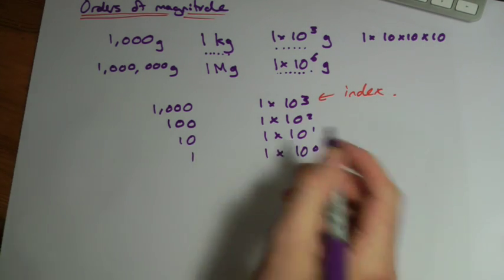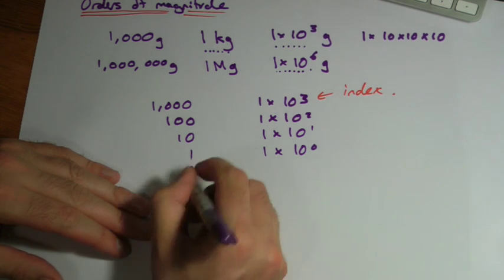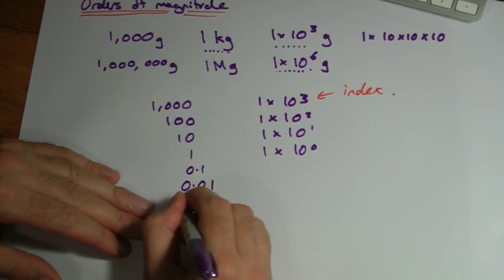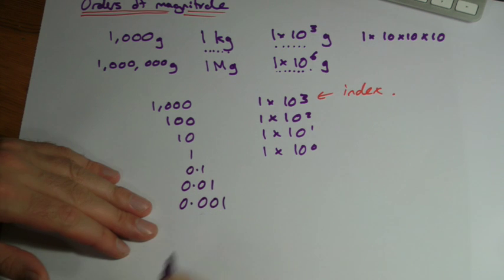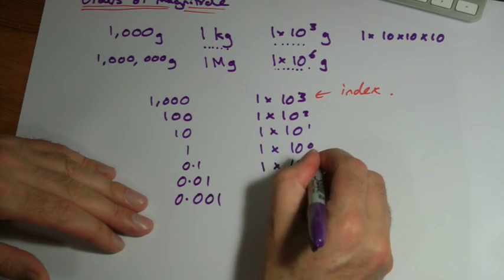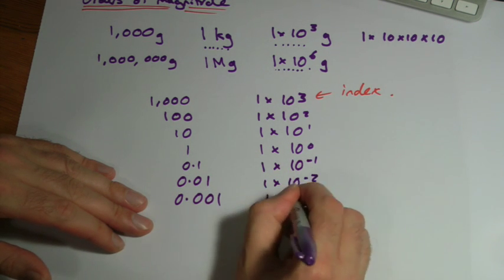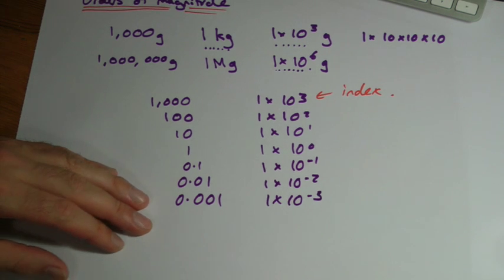But if you keep going, I'll write the numbers first of all. You just go down to negative indices. One times ten to the minus one, one times ten to the minus two, one times ten to the minus three.